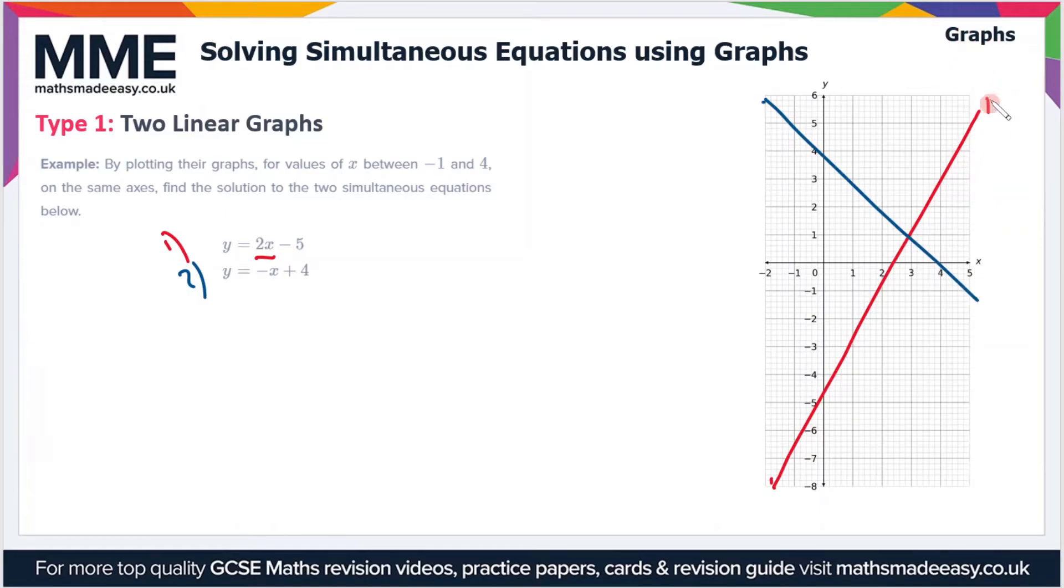So those are our two equations, let's label them on the graph, so that's equation 1, that's equation 2. Now the solution is where the two lines cross over. So that's this point here which as you can see is the point 3, 1. Now that's an x value of 3 and a y value of 1, so the solution therefore is x equals 3, y equals 1.